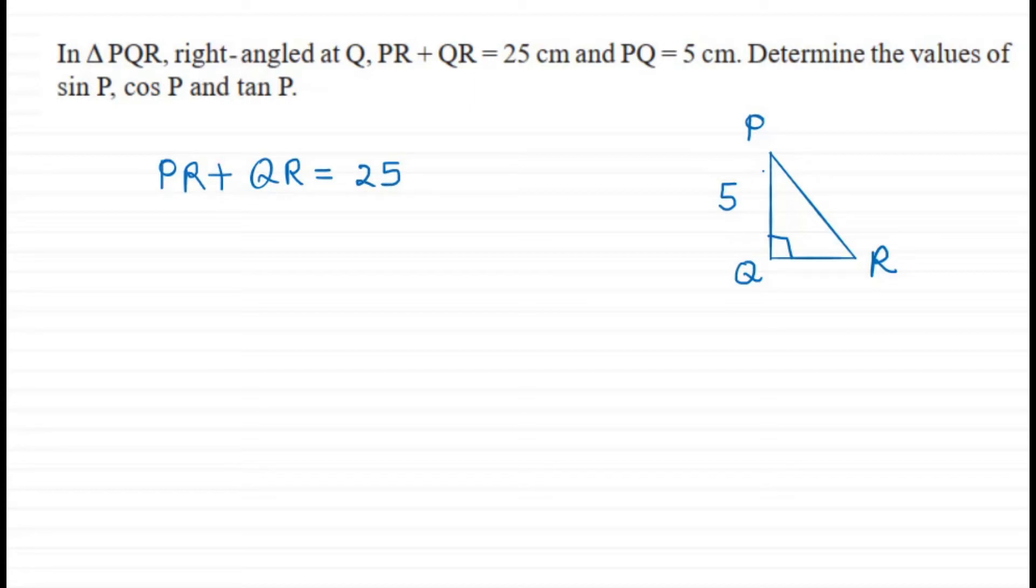We need to find these two sides so we can get the values of sin P, cos P, and tan P. Let this side be x, so the other side will be 25 minus x. Why? Because PR plus QR was given as 25, so if PR equals x, then QR is 25 minus x.